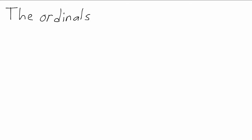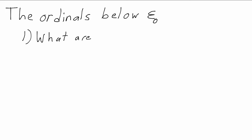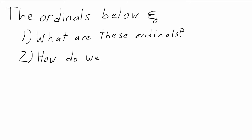We need to define this big family of infinite ordinals — the ordinals up to epsilon zero. That means we need to say what these ordinals are; we'll actually be able to write down a name for each of them. We also need a way to compare ordinals, since the ordinals are supposed to be ordered, so we need to know when one ordinal is less than another.